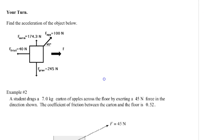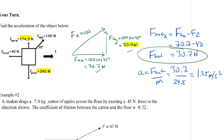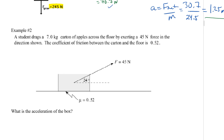For example two, please hit pause and try it yourself first. The answer: FA is 100 newtons at 45 degrees. The x and y components are both 70.7 newtons because cosine and sine of 45 degrees are equal. The y-axis is balanced, and the x-axis is unbalanced. F-net equals 30.7 newtons, and the acceleration equals 30.7 divided by 24.5, giving about 1.25 meters per second squared.